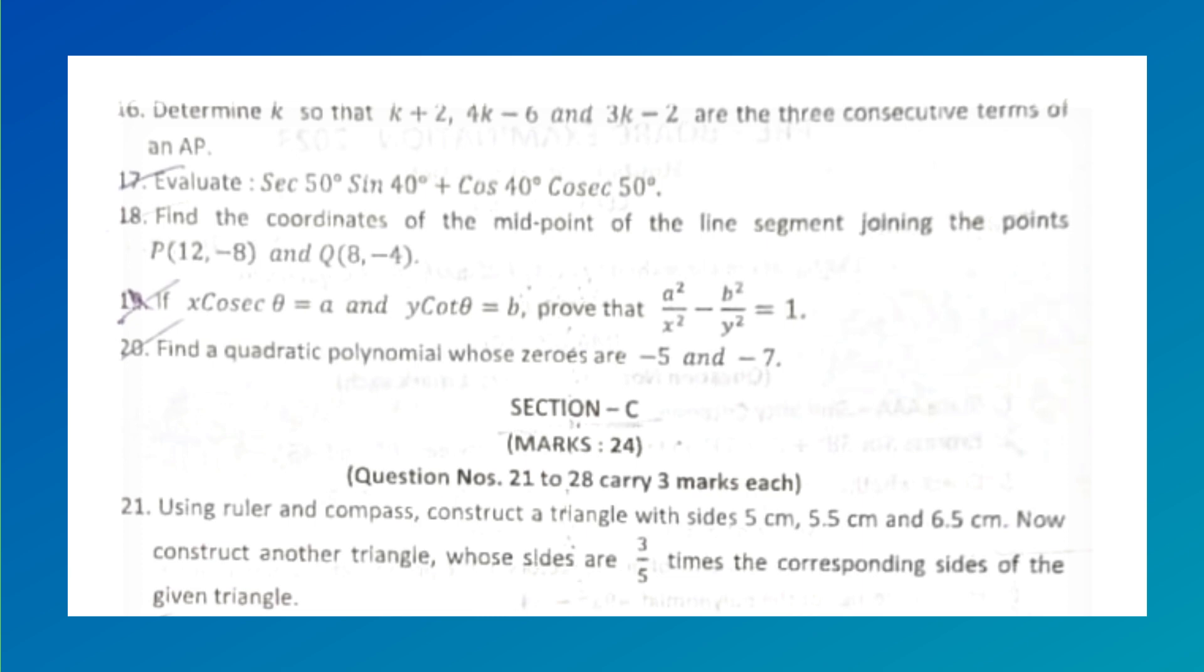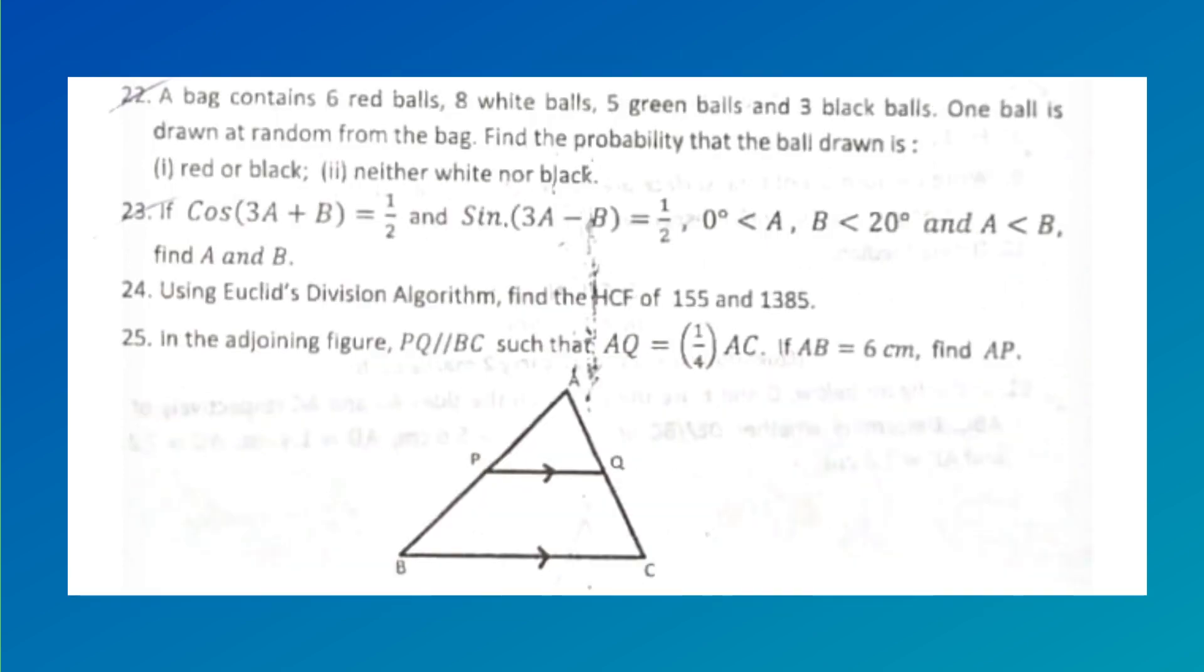Using ruler and compass, construct a triangle with sides 5 cm, 5.5 cm, and 6.5 cm. Now construct another triangle whose sides are 3/5 times the corresponding sides of the given triangle. A bag contains 6 red balls, 8 white balls, 5 green balls, and 3 black balls. One ball is drawn at random from the bag. Find the probability that the ball drawn is red or black, neither white nor not black.